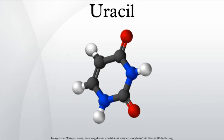Uracil is one of the four nucleobases in the nucleic acid of RNA, represented by the letters A, G, C, and U. The others are adenine, cytosine, and guanine.